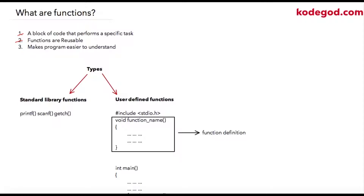To explain the use of functions, we can write a function for adding two numbers, and whenever in our program or module we want to add two numbers we can call that function directly. Now obviously addition is something that can be achieved easily by using the addition operator, so using functions for such a small operation doesn't make any sense. But consider a case wherein you are required to perform some complex operations — for example, calculating mean and standard deviation for a given set of data points. For this example, you can write a function and use it whenever you want to calculate standard deviation.